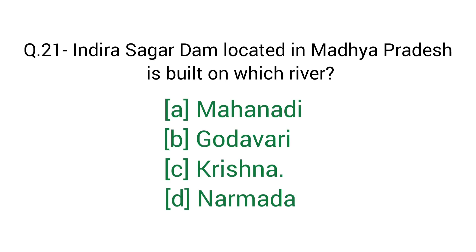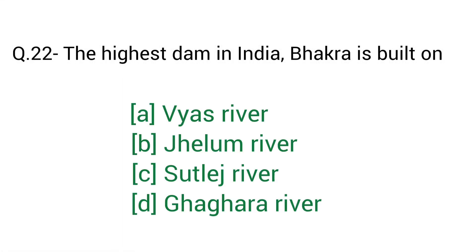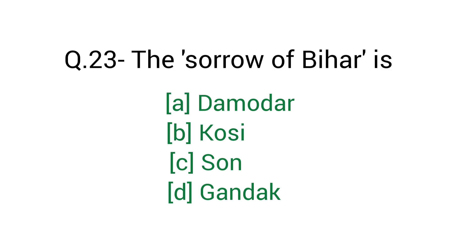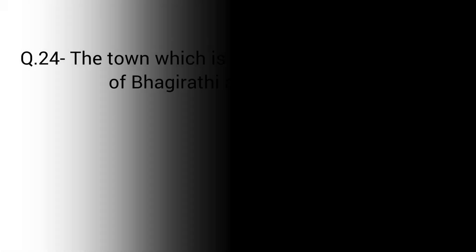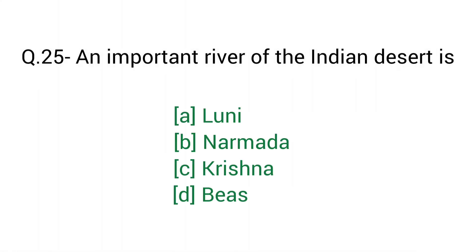Question number 21: Indira Sagar Dam, located in Madhya Pradesh, is built on which river? Right answer option D: Narmada river. Question number 22: The highest dam in India, Bhakra, is built on — right answer option C: Sutlej river. Question number 23: The sorrow of Bihar is — right answer option B: Kosi. Question number 24: The town situated at the confluence of Bhagirathi and Alaknanda is — right answer option B: Devprayag. Question number 25: An important river of the Indian desert is — right answer option A: Luni.